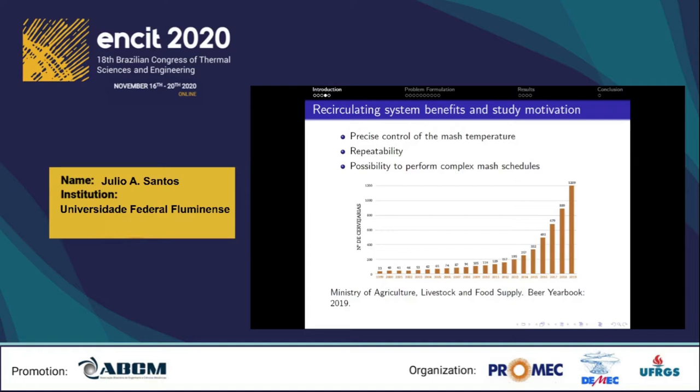Regarding study motivation, 2019 beer yearbook data from the Ministry of Agriculture shows a 36% increase in the number of registered brewers in Brazil from 2018 to 2019. The number of beers registered has been increasing as well. The industry is in constant growth, so it is important to pay attention to innovation, as is the case with the advanced systems that can improve process control, which were the subject of this study.